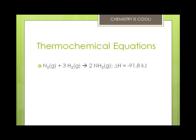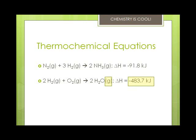Two important rules for manipulating thermochemical equations: first, when a thermochemical equation is multiplied by any factor, the value of delta H for the new equation is obtained by multiplying the delta H in the original by the same factor. Second, when the chemical reaction is reversed, the value of delta H is also reversed in sign.